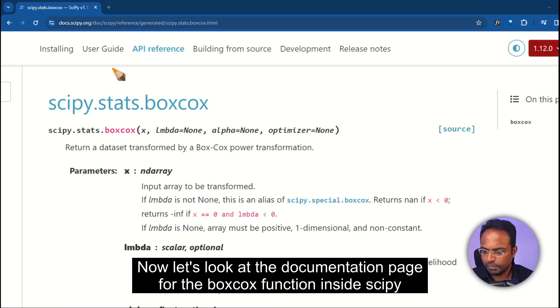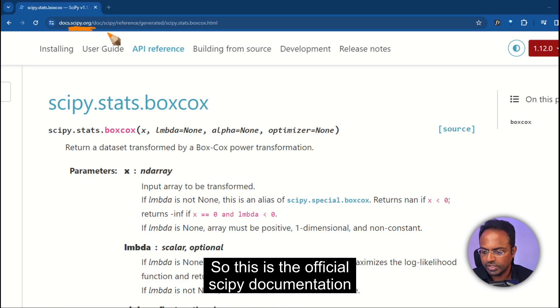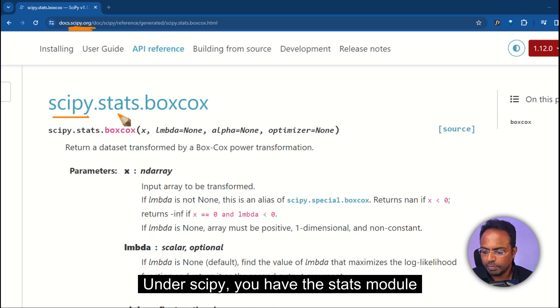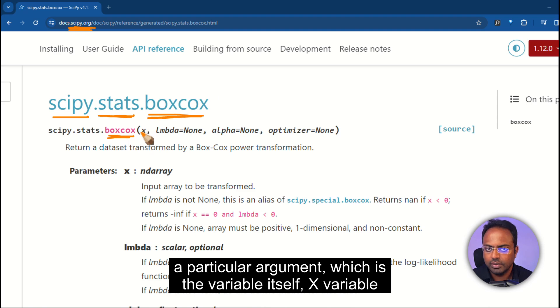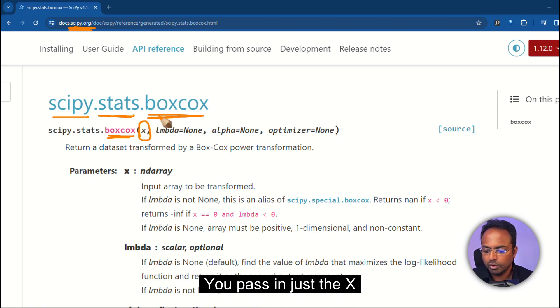Now, let's look at the documentation page for the Box-Cox function in SciPy. This is the official SciPy documentation. Under SciPy, you have the stats module. Under stats, you have this function called Box-Cox. You can use this. See here, Box-Cox takes a particular argument, which is the variable itself, x variable. You pass in just the x.